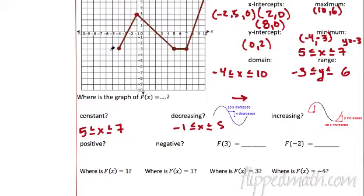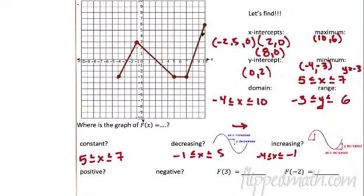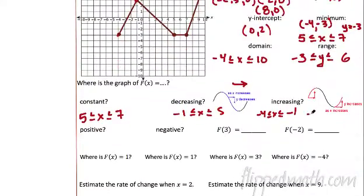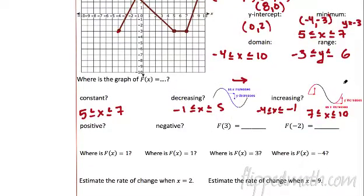Where does it increase — where does it go uphill? Well, two places: from negative four to negative one. Compound inequality: x has to be greater than or equal to negative four but less than or equal to negative one. And also from seven, it's increasing all the way to ten. So from seven to ten — that's where the function is increasing. If you notice, as you go right, it's going up.